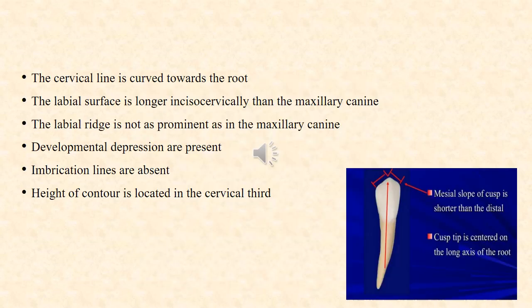The cervical line on the labial aspect is curved towards the root. The labial surface is longer incisocervically compared to the maxillary canine. The labial ridge is not as prominent as in the maxillary canine, and it divides the labial aspect into two, resulting in developmental depressions. Imbrication lines are absent in the mandibular canine. The height of contour is located in the cervical third.